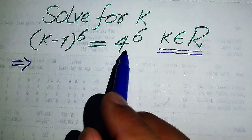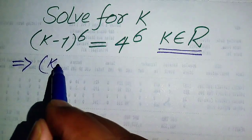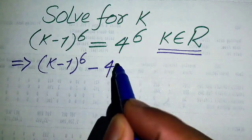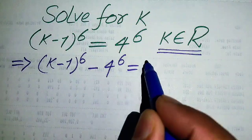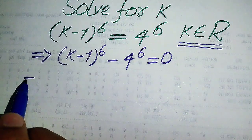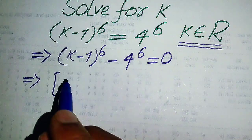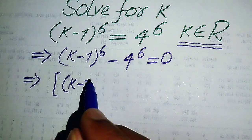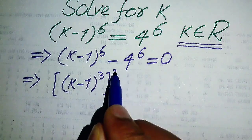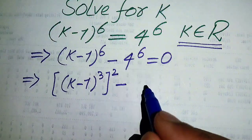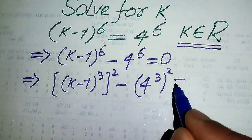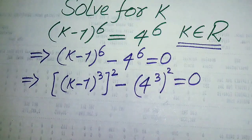We move toward the solution. First we need to rewrite this equation by moving 4 to the power of 6 to the left-hand side, so it becomes (k-1)^6 minus 4^6 equals 0. We then rewrite this as [(k-1)^3]^2 minus [4^3]^2 equals 0.